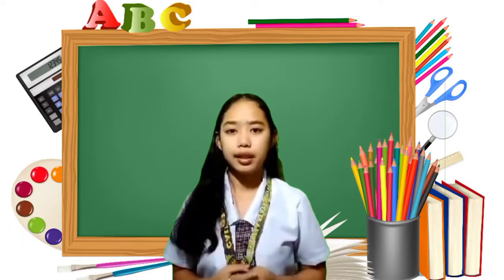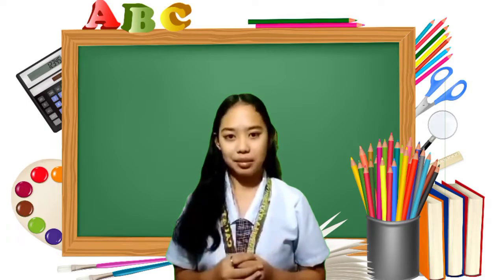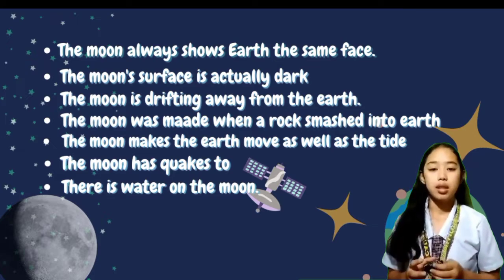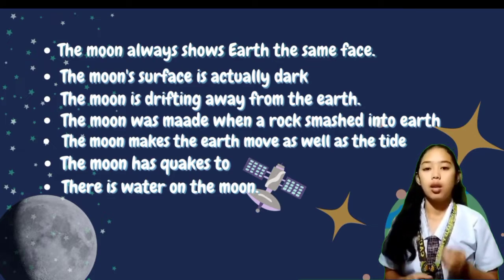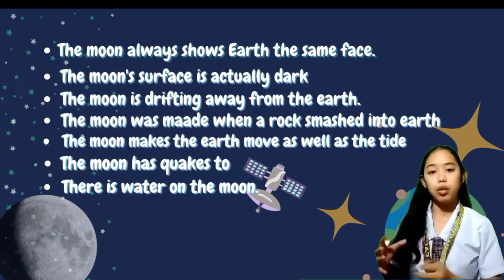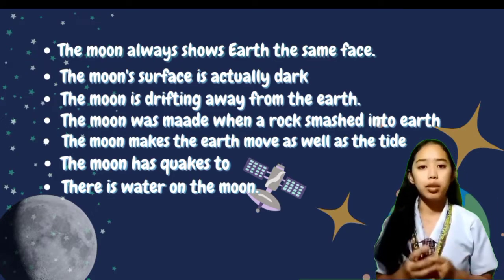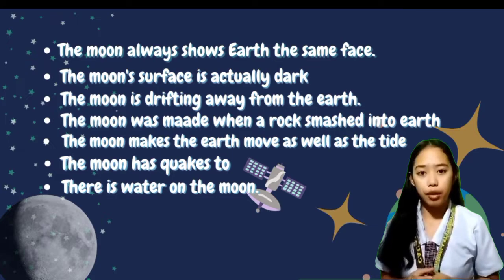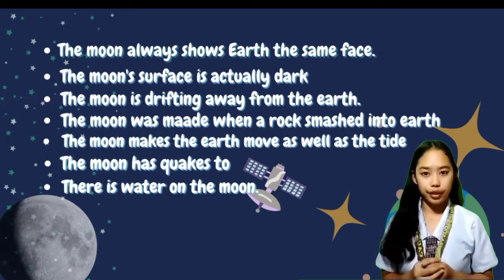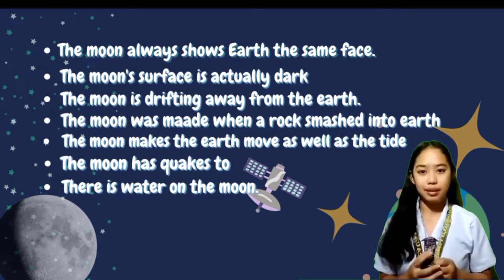Compared to Earth, the Moon is less than a third of our home planet. The Moon's surface is actually dark, meaning there is no light on the Moon itself, but we can see the Moon through the light from the Sun. The Moon is drifting away from the Earth, and it was made when a rock smashed into the Earth. The Moon also makes the Earth move, as well as the tides.